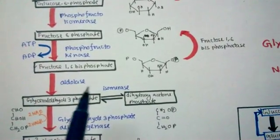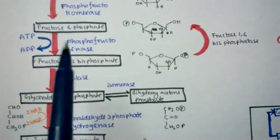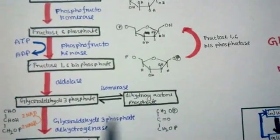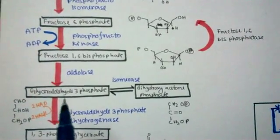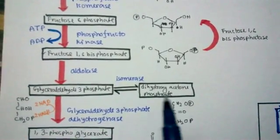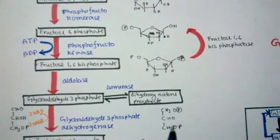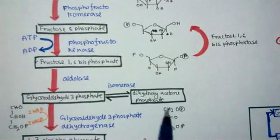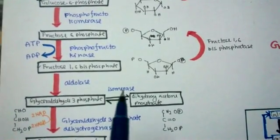After that, aldolase breaks this six-carbon product into two three-carbon sugars: one is an aldose and the other is a ketose. The aldose is named glyceraldehyde-3-phosphate, which has a phosphate group at the third position. It is also converted to dihydroxyacetone phosphate (DHAP). These two sugars are interconvertible by an isomerase enzyme.